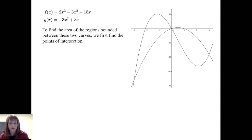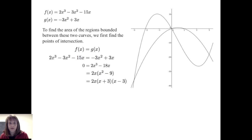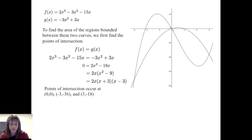Before we can proceed, we really need to find the points of intersection. We find the points of intersection by finding when f of x equals g of x. Algebraically, we find that occurs when x equals 0, x equals negative 3, and x equals positive 3, giving us the points (0, 0), (−3, −36), and (3, −18).